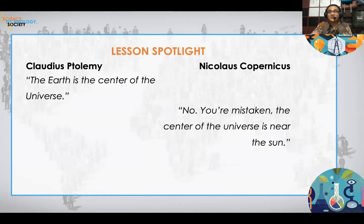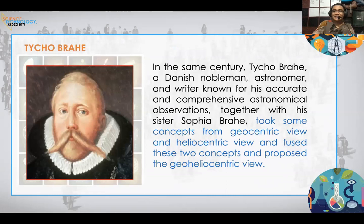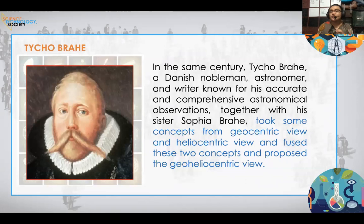This is a lesson spotlight: Ptolemy said the Earth is the center of the universe; Nicholas Copernicus said you are mistaken — the center of the universe is near the sun. This was followed by Tycho Brahe, a Danish nobleman and astronomer known for his accurate and comprehensive astronomical observations. Together with his sister Sophia Brahe, he took concepts from both geocentric and heliocentric views and fused them into a geoheliocentric view.